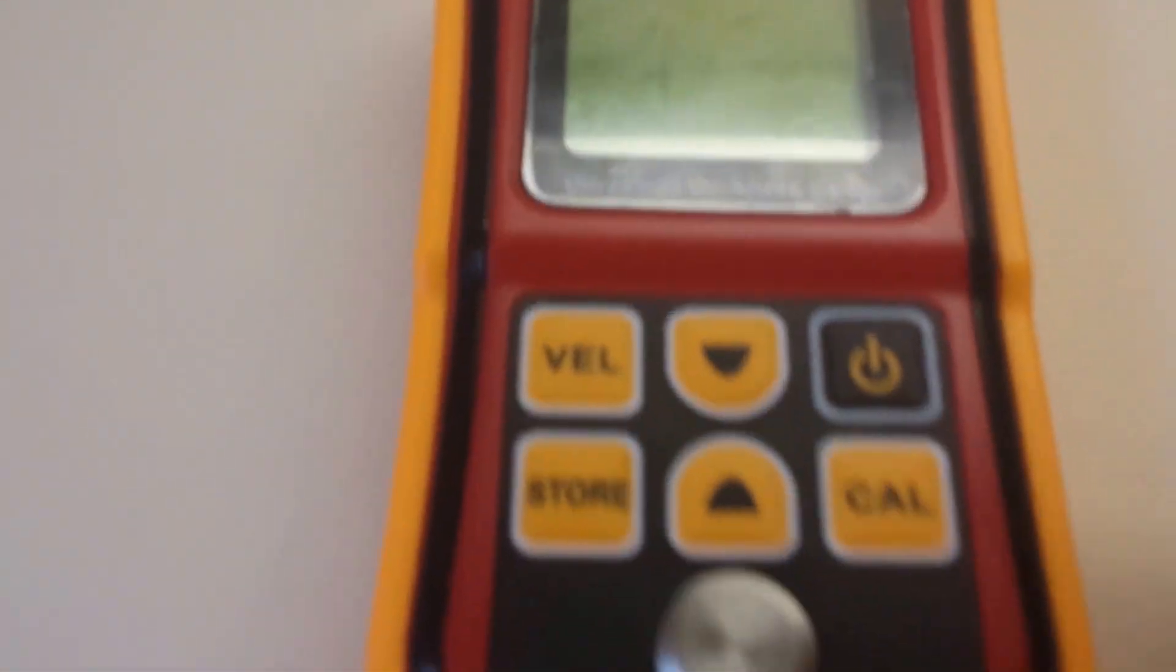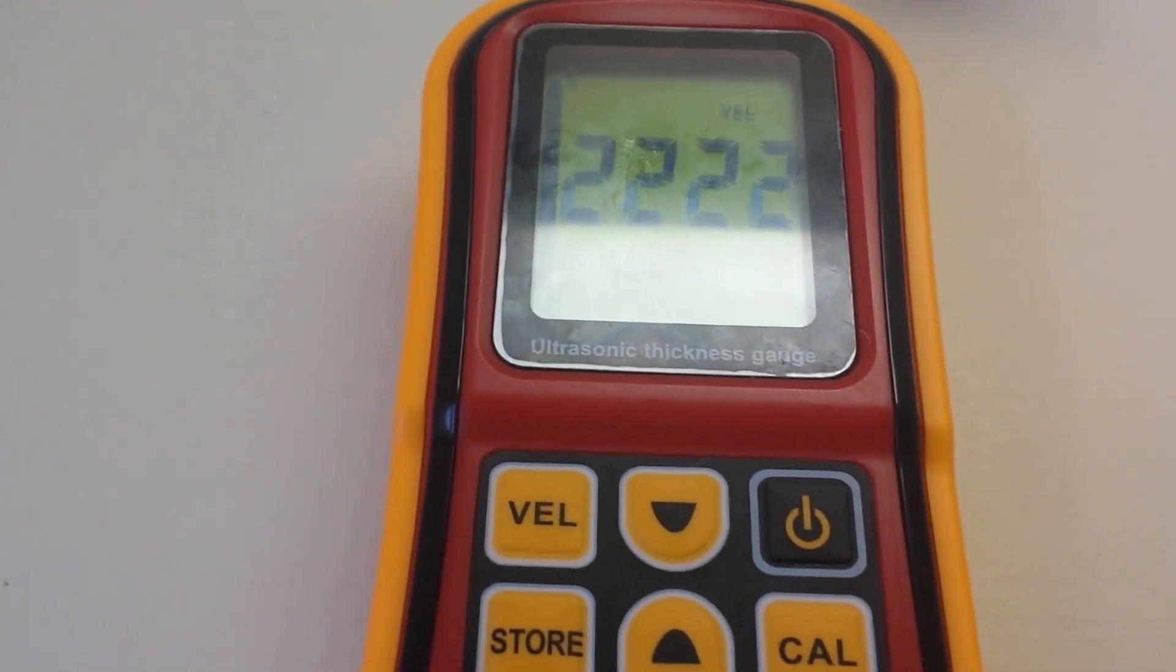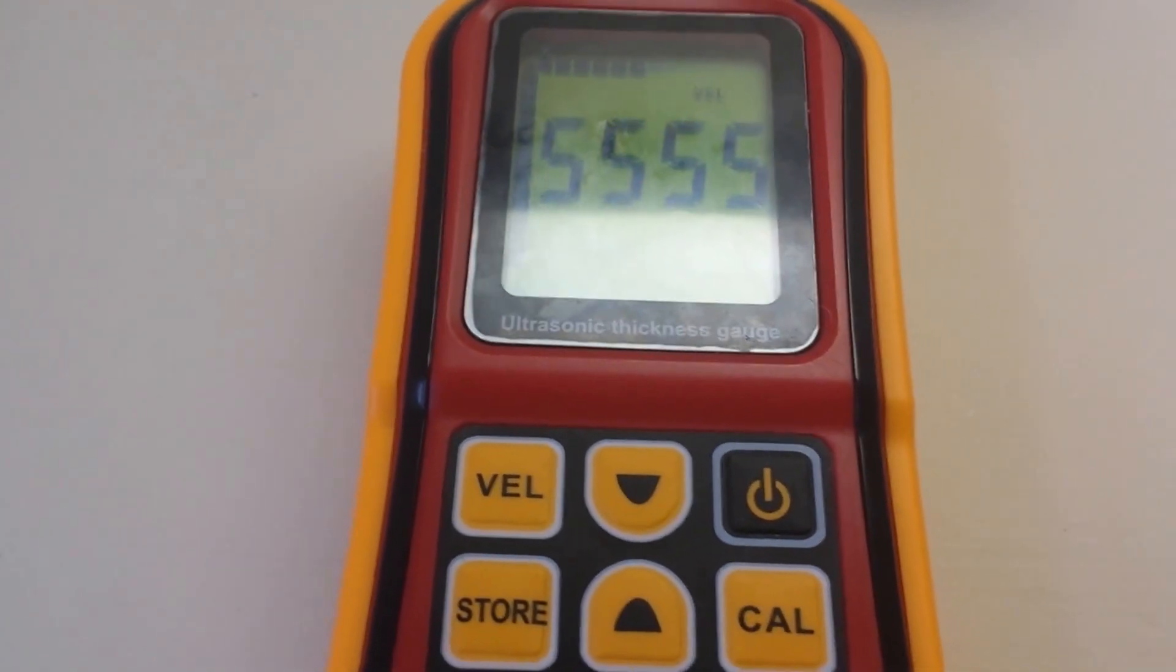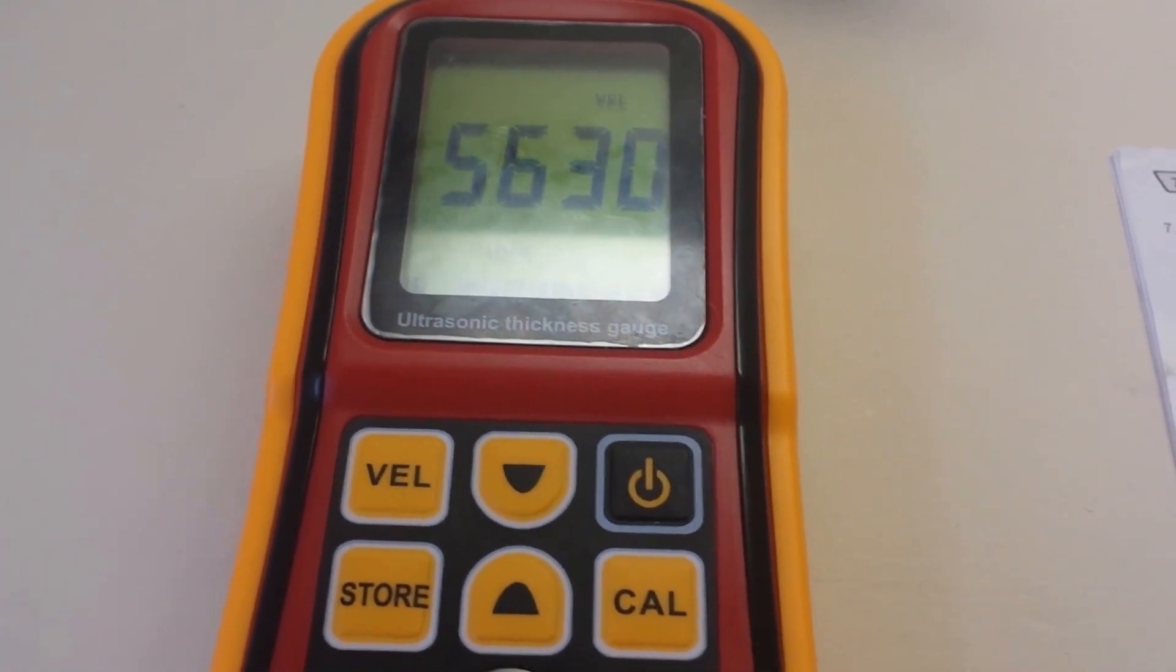Now, moving on to the ultrasonic thickness gauge, first I turn the device on. You can see it's warming up. Considering these devices only cost approximately $100, I really consider this to be one of the best ways to test your coins for the material.